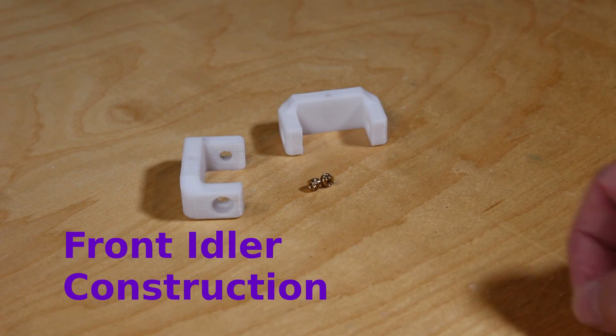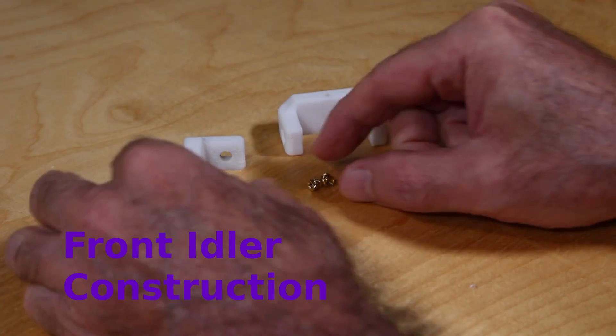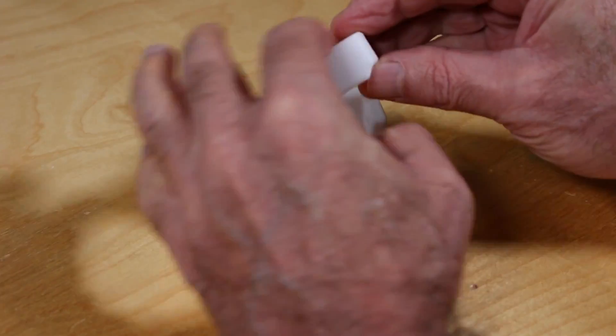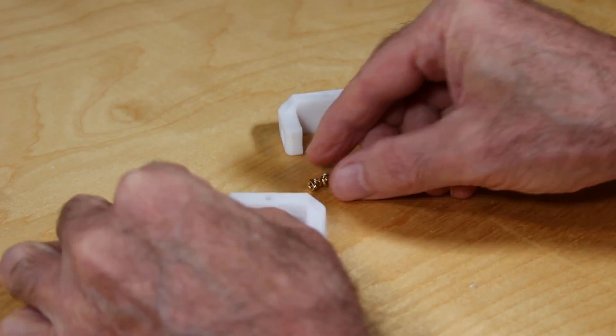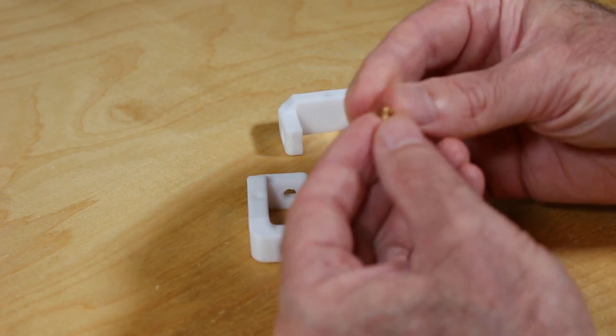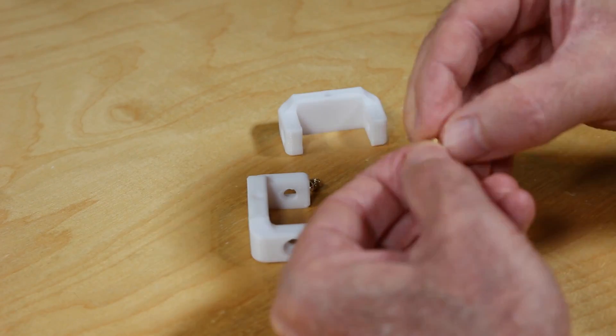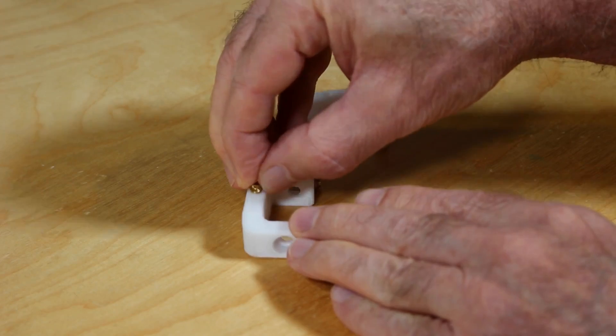We'll start with adding the heat set inserts to the front idlers. When you take a look at these, there's a flat edge and a not so flat edge. We need to make sure we're inserting these on the shaped edge that is not completely flat.